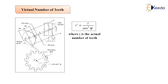In the design of helical gears, an imaginary spur gear is considered in the plane AA with a center at o', having a pitch circle radius of r' and module mn. It is called a formative or virtual spur gear. This formative gear is as shown in figure.